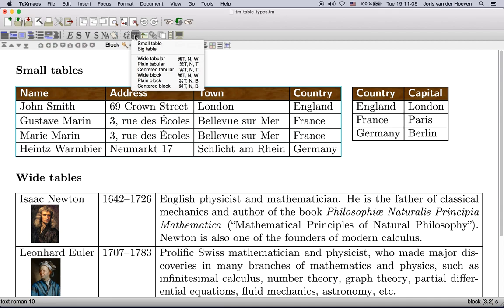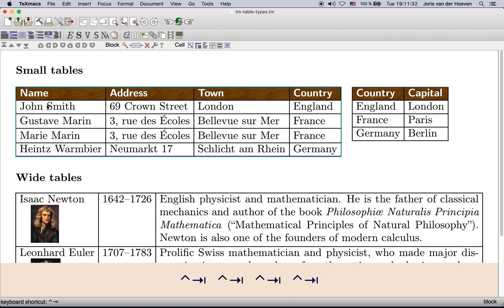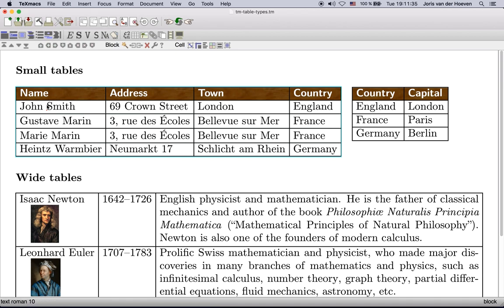On the one hand we have so-called small tables. There are four basic types of them, depending on whether the cells are left aligned or centered, and whether they admit a border or not. You may use Ctrl-Tab to switch between the different variants. Small tables admit the property that the size of the table automatically adapts to the contents of the cells, and that we can put several tables on a line or in the middle of surrounding text.